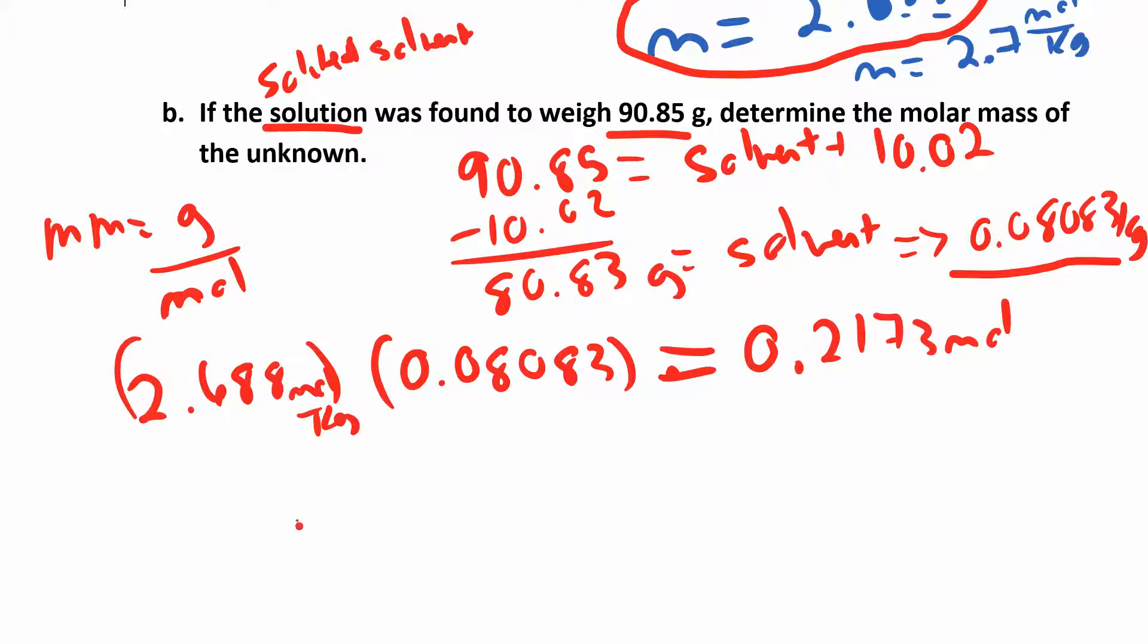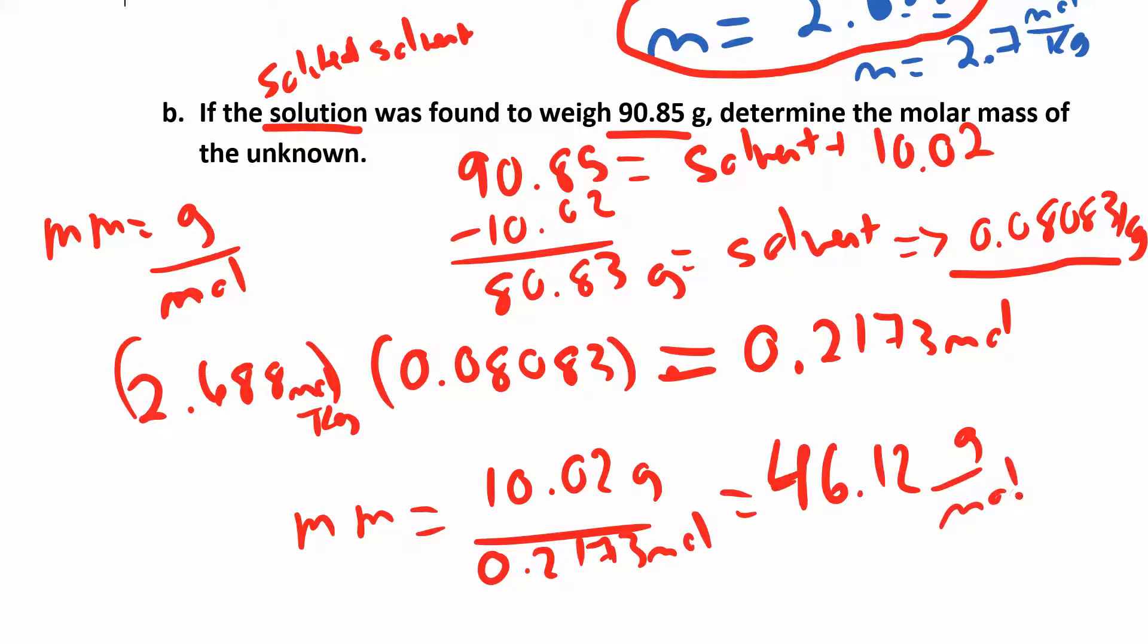And then to find the molar mass, it's just grams over moles. So I dissolved 10.02 grams and I had 0.2173 moles. So that gives us 46.12 grams per mole. But I think we really only have like two sig figs because the delta T was only in two. So if we were at 46 grams per mole, that's fine.